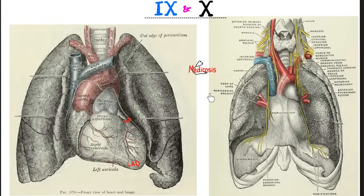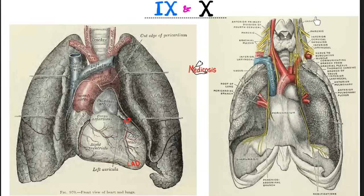When it comes to the baroreceptor reflex, we have two heroes: the glossopharyngeal nerve and the vagus nerve — cranial nerves 9 and 10 respectively. This is the vagus nerve. Why do we call it vagus? Because it's the wandering nerve — it keeps wandering all over the body, and in the beginning we did not know what function it serves, so we called it the vagus. The vagus nerve is part of the parasympathetic autonomic nervous system, so it lowers the heart rate.